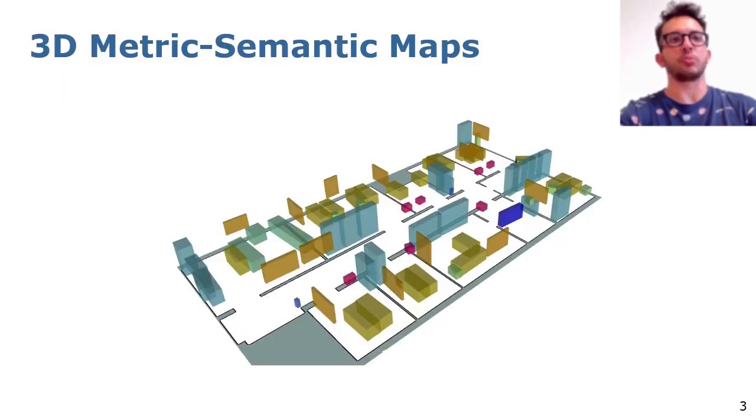We utilize 3D object detection to construct object-centric maps, augmenting readily available floor plan maps with semantic information. In here, we only consider stable classes that are beneficial for long-term localization, such as sinks, power extinguishers and cabinets.